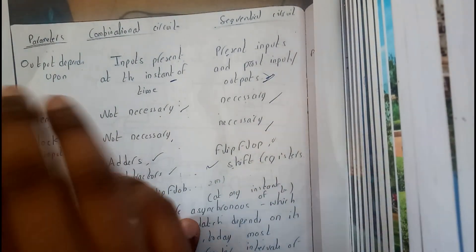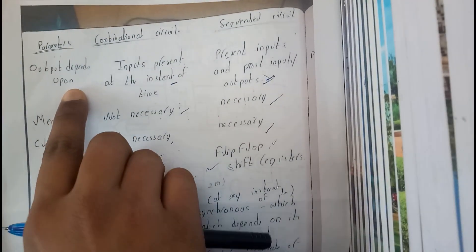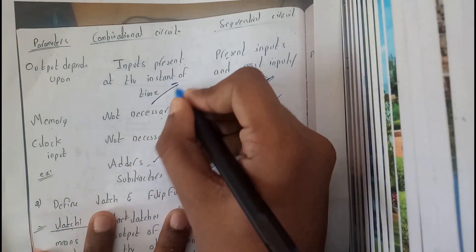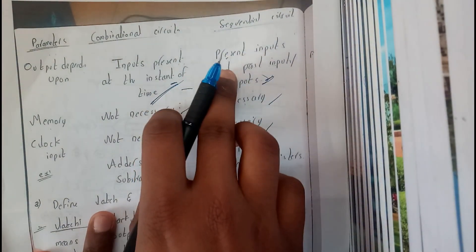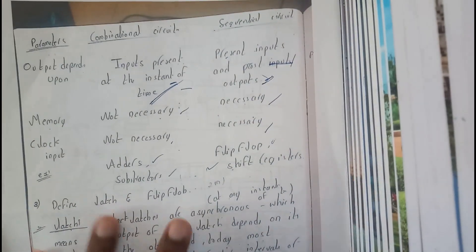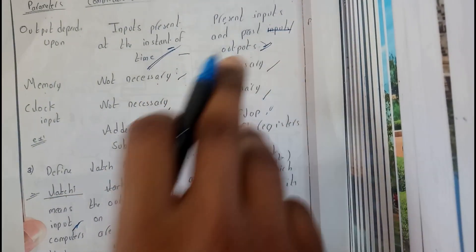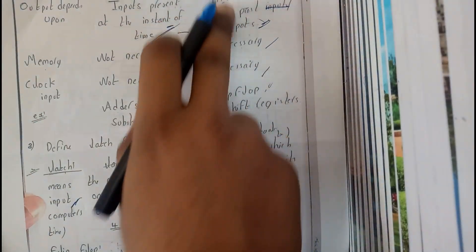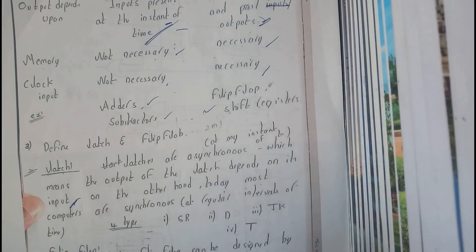Let us go through some differences using this printout from my classwork. Parameters: output depends — in combinational circuits, the output depends only on the present inputs at a particular instant of time. In sequential circuits, the output depends on the present inputs and the past outputs. Combinational circuits have no memory, whereas sequential circuits have memory as they store previous data. Combinational circuits need no clock input, while sequential circuits need a clock input — we will cover synchronous and asynchronous clock in the next chapter.